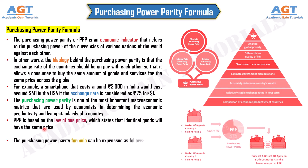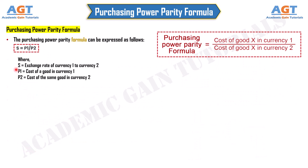The Purchasing Power Parity formula can be expressed as S equals P1 divided by P2, where S represents the exchange rate of currency 1 to currency 2, P1 represents the cost of a good in currency 1, and P2 represents the cost of the same good in currency 2.